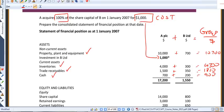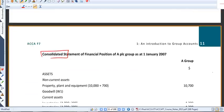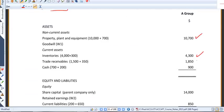So keep your eye on those numbers: 10,700, 4,300, 1,850, and 900. They all appear over the page as the group figures.